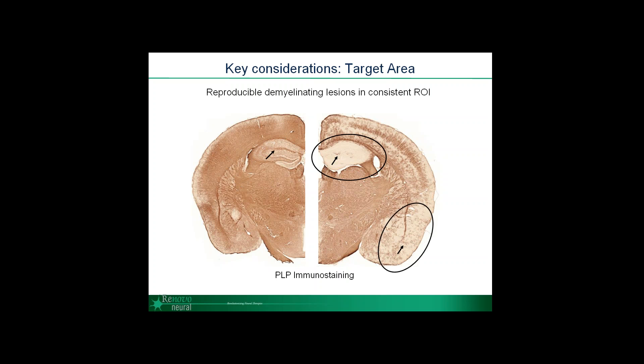Importantly, this loss in this one particular region is consistent and reproducible brain-to-brain. This makes it an ideal region to measure changes in axon myelination. So while you may see some general changes in your staining, it's important to really hone in on what area gives you the most reproducible data.